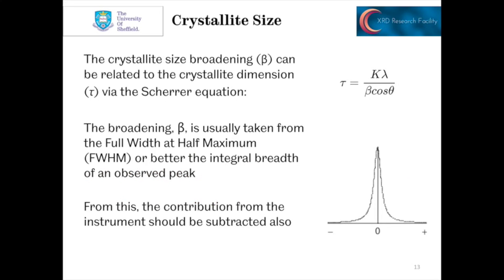This crystallite broadening can be related to the crystallite dimension tau via the Scherrer equation that you can see on the right-hand side here. And so beta, the broadening, is something that we can measure by measuring the full width half maximum or the area of the peak or so on. The broadening beta can be put into that equation and we can work out exactly what the crystallite size is.